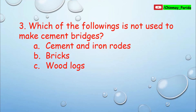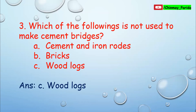Question number 3. Which of the following is not used to make cement bridges? You have to remember what ingredients are used to make cement bridges and pick the option which is not used. To make cement bridges we need cement, iron rods, bricks, sand, etc. Option A is cement and iron rods, option B is bricks — both are used to make cement bridges. The remaining option C, wood logs, is the answer. Wood logs are not used to make cement bridges.